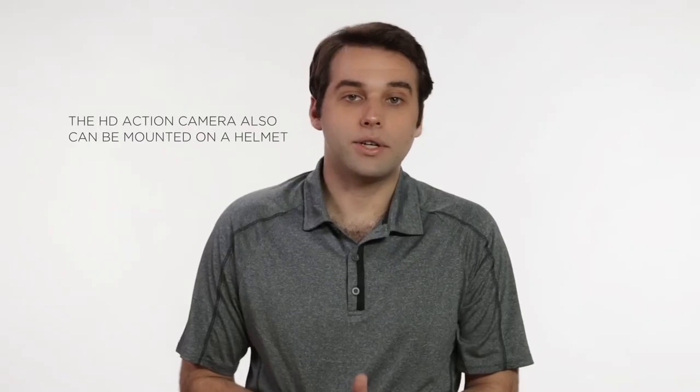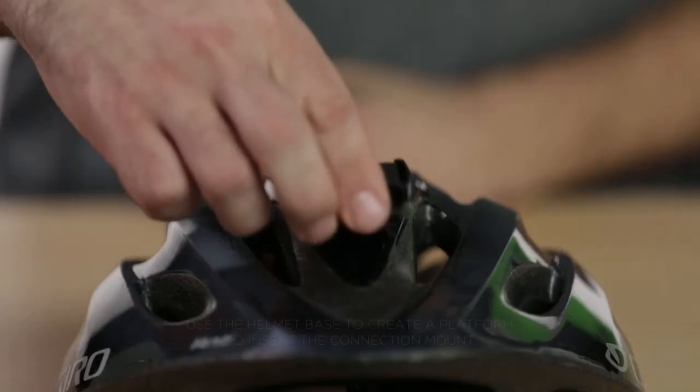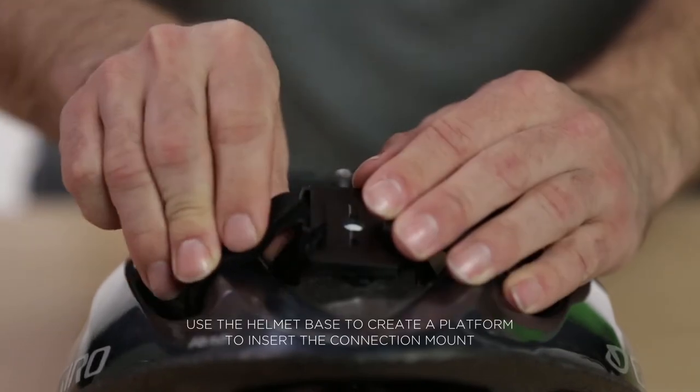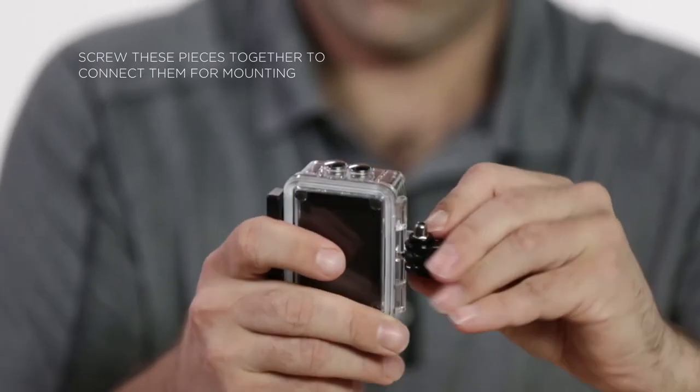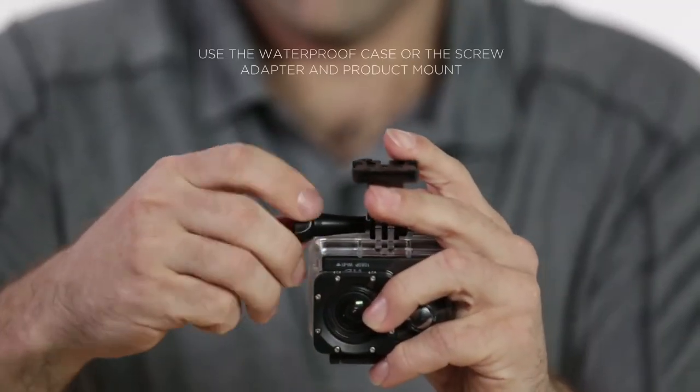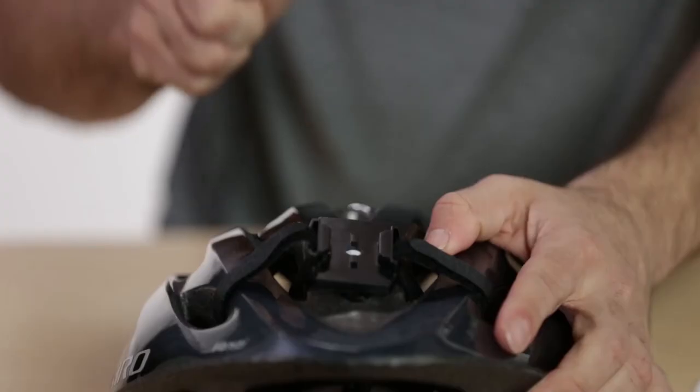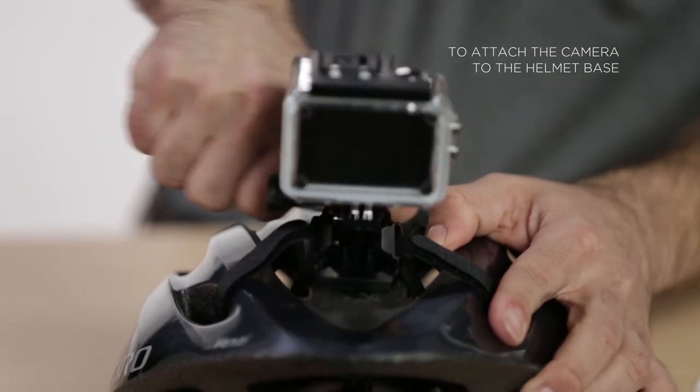The HD action camera can also be mounted on a helmet. Use the helmet base to create a platform to insert the connection mount. Screw these pieces together to connect them for mounting. Use the waterproof case or the screw adapter and product mount to attach the camera to the helmet base.